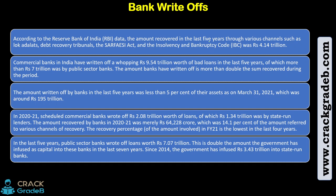As per the Reserve Bank of India, the amount recovered in the last five years through various channels such as Lok Adalat, Debt Recovery Tribunal, SARFAESI Act, and IBC was around Rs 4.14 trillion. Commercial banks in India have written off Rs 9.54 trillion in the last five years, out of which Rs 7 trillion was by public sector banks alone and the rest Rs 2.54 trillion by all other banks. The amount written off is less than 5% of their assets as on March 31, 2021.